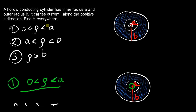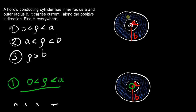The question asks us to find the magnetic field intensity H everywhere. When dealing with problems like this, it's useful to define all the regions first. Region 1 is where ρ is between 0 and a (inside the hollow). Region 2 is the blue shaded area where ρ is between a and b. Region 3 is everywhere outside, where ρ is greater than b.